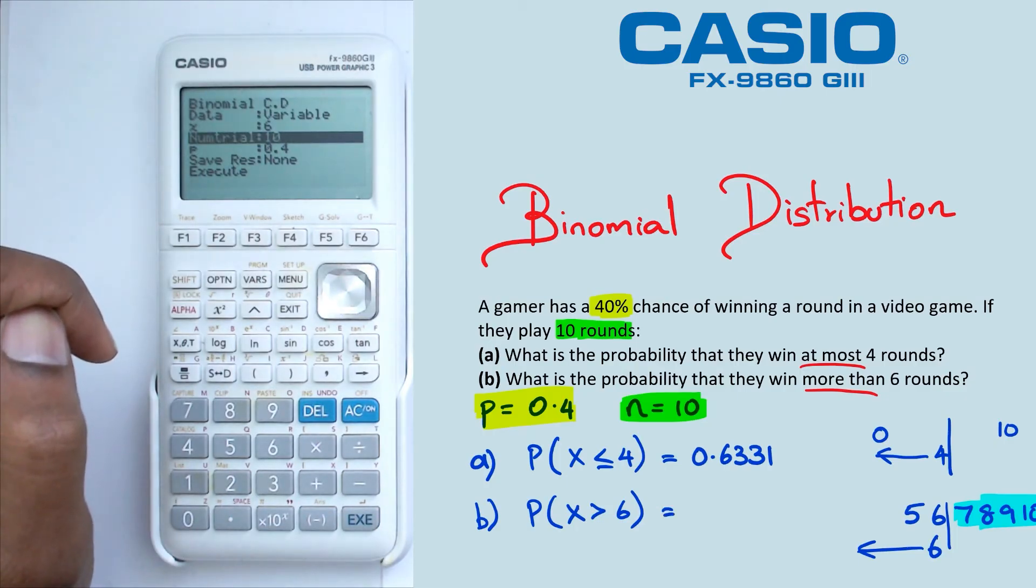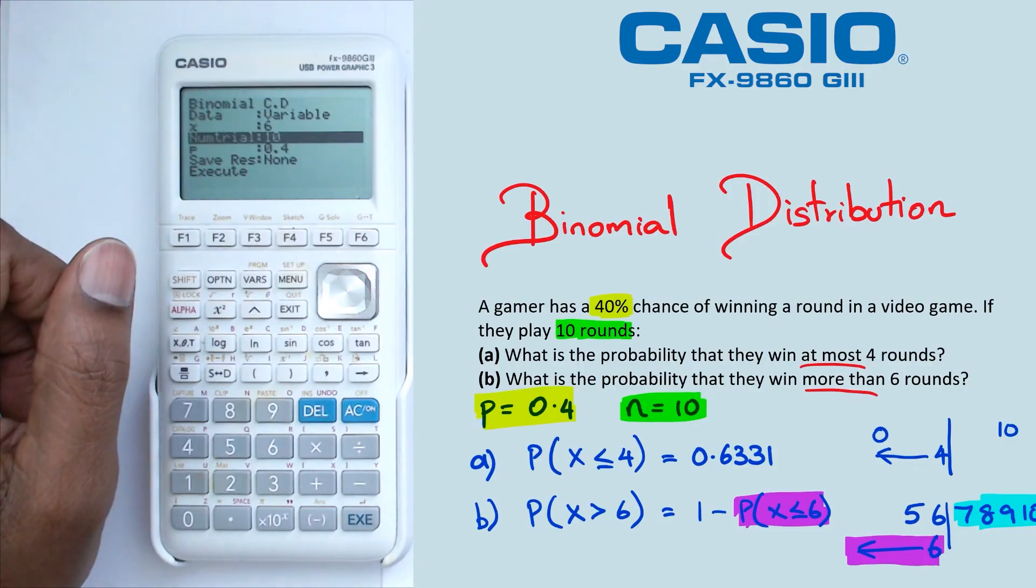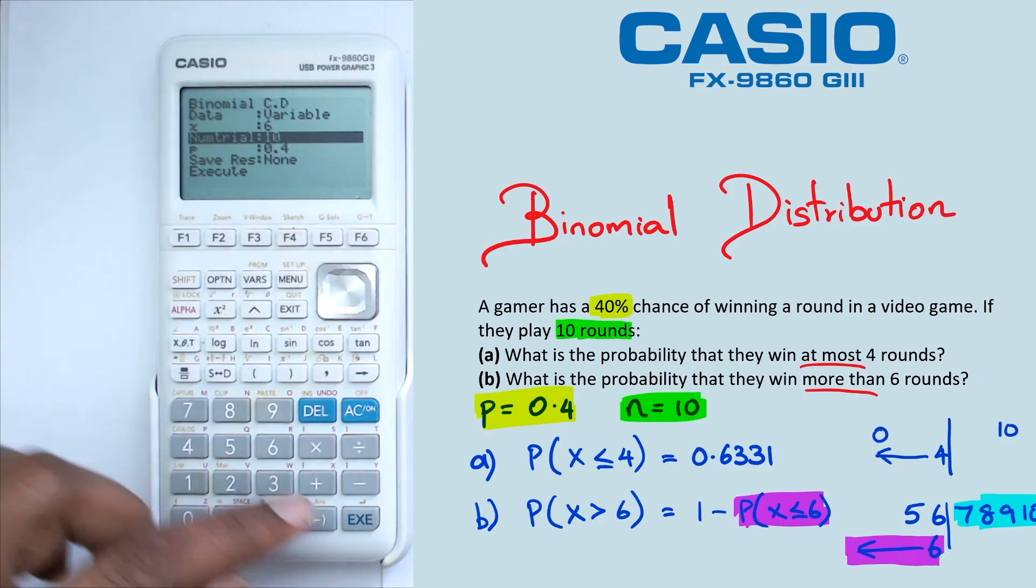So now this is the same thing as saying one minus probability of X less than or equal to six, because the probability of X less than or equal to six is basically this side of that line there. So we're going to work out what probability of X less than six is.